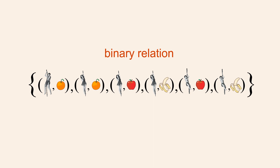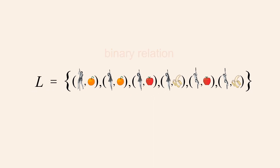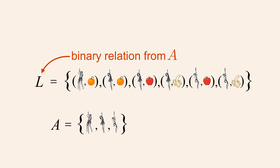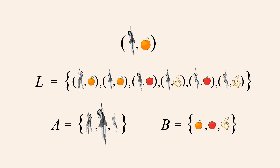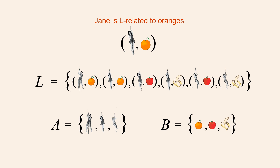Let's name this set of ordered pairs L. So we say that L is a binary relation from set A to set B. Each ordered pair that's a member of set L makes a statement about how one person in set A is related to one fruit in set B. A mathematician would say that this ordered pair makes the statement: Jane is L-related to oranges, or in plain English, Jane likes oranges.